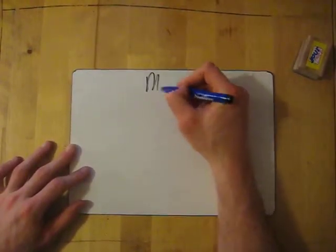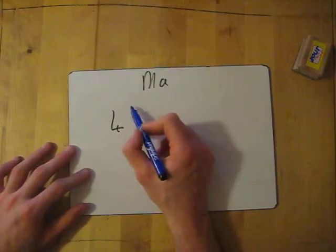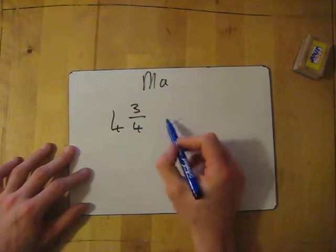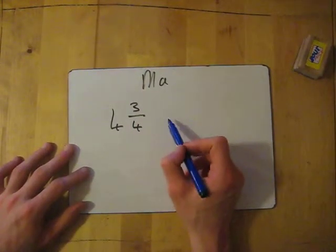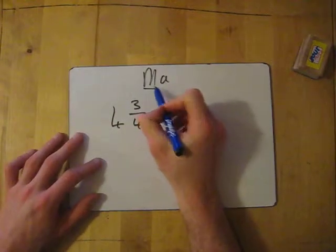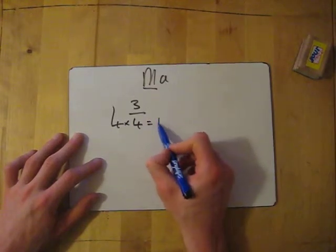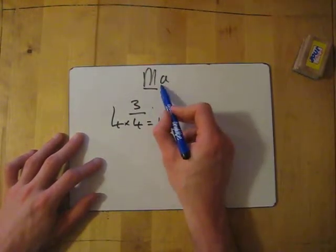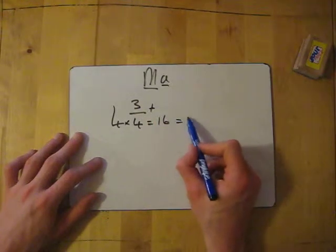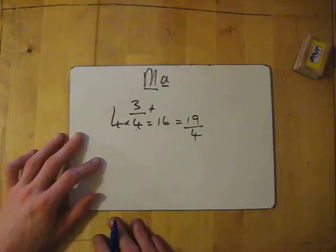One for you to have a go at now. Now remember, mixed, we're asking MA. So if you've got 4 and 3 quarters, what is that as an improper fraction? If you want to pause, have a little go. So we'll go through the answer in 3, 2, 1. So we multiply, so multiply the whole number with the denominator. 4 times 4 equals 16. And then we add, add the 3. 3 add 16 equals 19. And then the denominator stays the same. Easy as that.